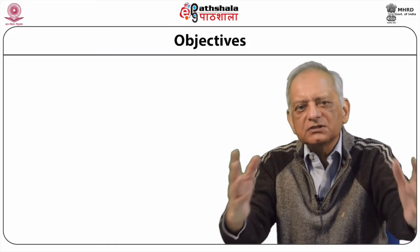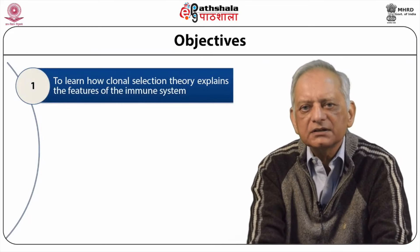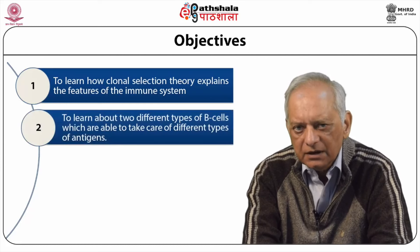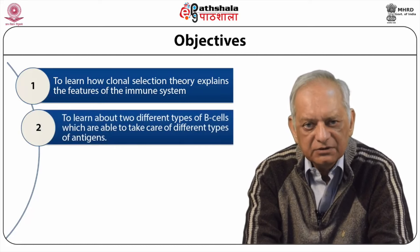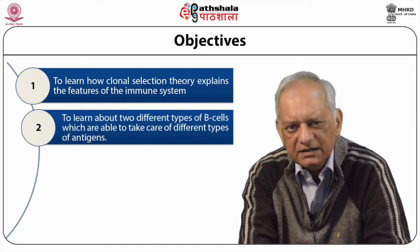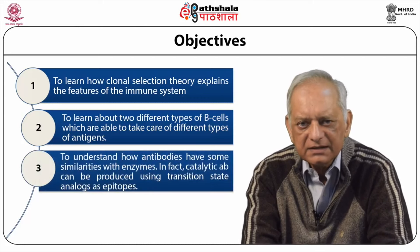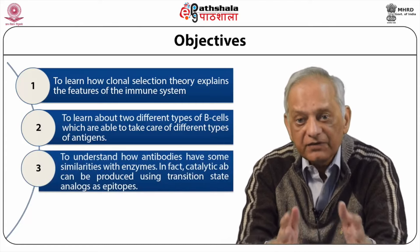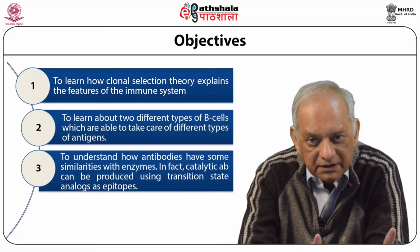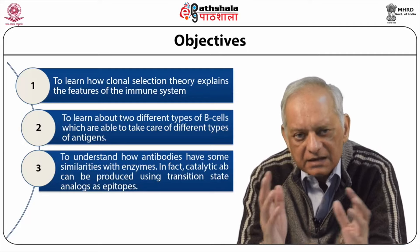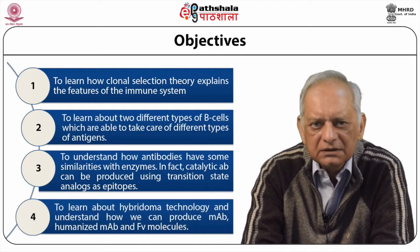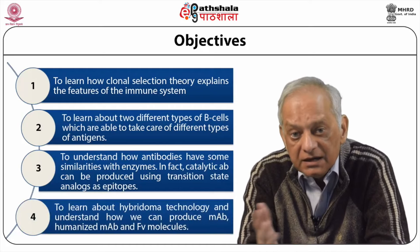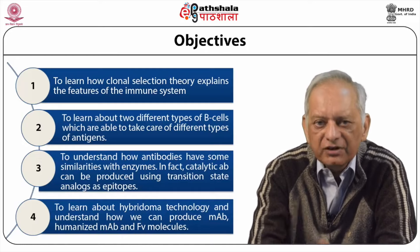The objectives of this module are to learn about how clonal selection theory explains the features of the immune system. We will also learn about two different types of B cells which are able to take care of different types of antigens, and to understand how antibodies have some similarities with enzymes. Catalytic antibodies can be produced using transition state analogues as epitopes. We will also learn about hybridoma technology and understand how we can produce monoclonal antibodies, humanized monoclonal antibodies, and FV molecules.